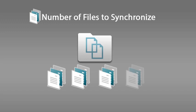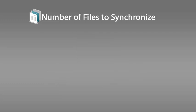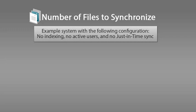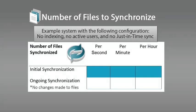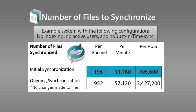The number of files on a given netfolder for which you perform a full synchronization affects system performance. You should understand the amount of time it will take to complete the synchronization. For example, on a Filer test system at Novell, with no indexing, no active users, and no just-in-time synchronization, Filer was able to synchronize files at the following rate. For the initial synchronization: 196 files per second, 11,760 files per minute, and 705,600 files per hour. For each ongoing synchronization when no changes were made to files: 952 files per second, 57,120 files per minute, and 3,427,200 files per hour. You should take these numbers into consideration as you configure the sync schedules for the netfolders on your Filer system.